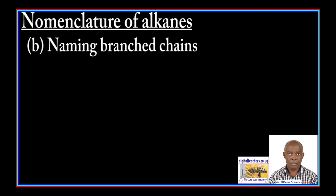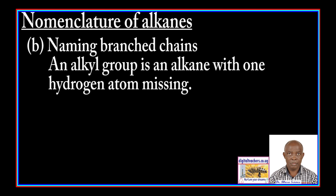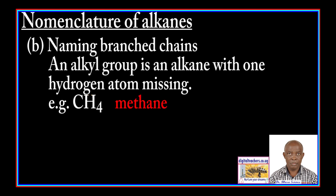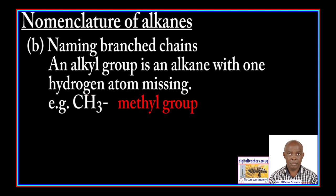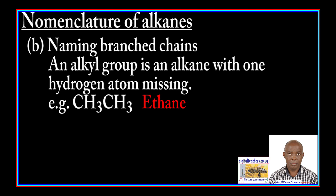Naming branched alkanes. Before we name the branched alkanes, let us look at the definition of an alkyl group. An alkyl group is an alkane with one hydrogen atom missing. For example, CH4 is methane; CH3 with one missing bond is the methyl group. CH3-CH3 is ethane; CH3-CH2 is the ethyl group.